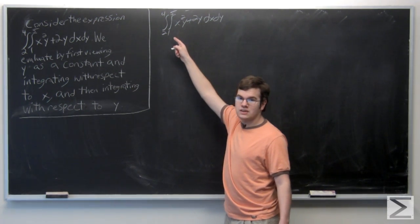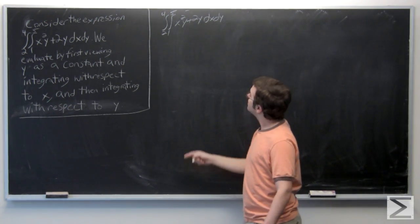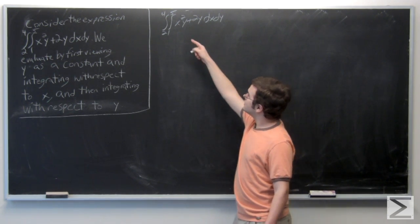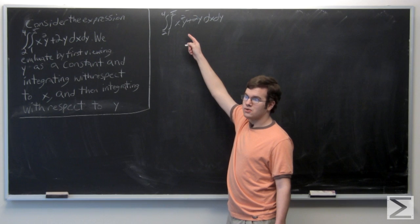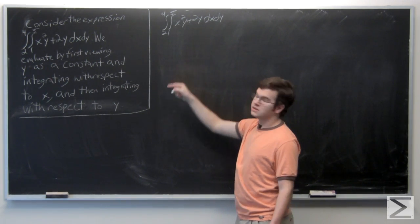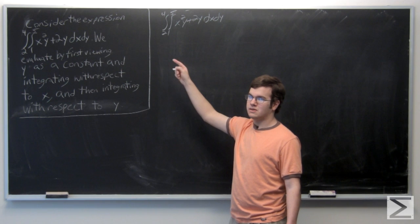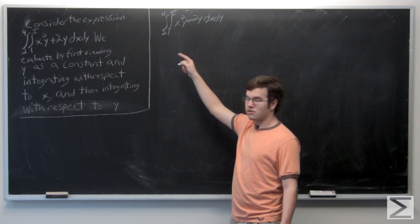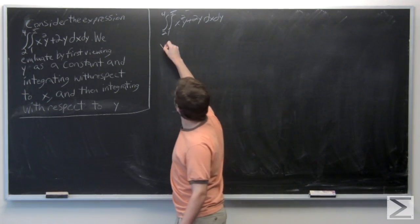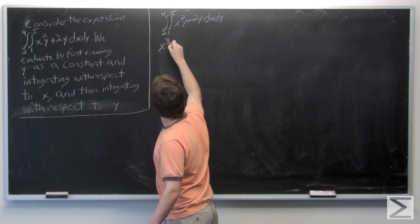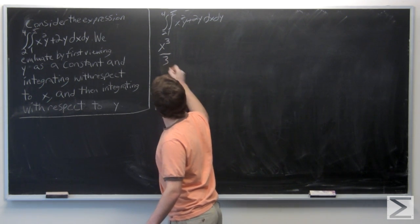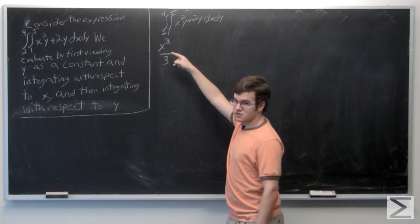So when we integrate x squared y, we notice that due to the power rule, x squared when integrated becomes x to the cubed over 3. And of course, y is constant, so we carry it through.